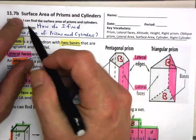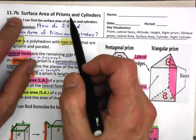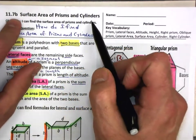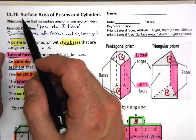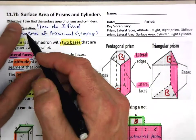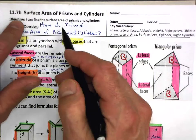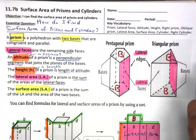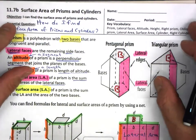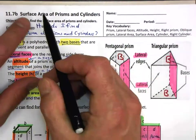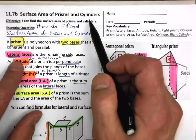Welcome to 11.7b. We're looking at surface area of prisms and cylinders. In our textbook, we do not have an 11.7b, nor a C that we will do next time. So this is information that's not in your Larson textbook, but I'm pulling it from a different textbook, and it will be on the FSA. So it's important for us to know how to find the surface area of prisms and cylinders.